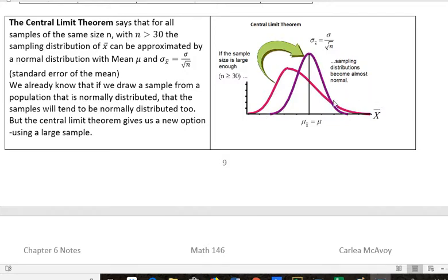And so here's a picture of how we take a population that may not be normal, but if we have a n that's large enough, we can start to see a normal distribution. So that's what the next example is going to be working with.